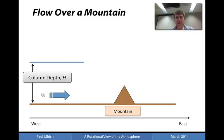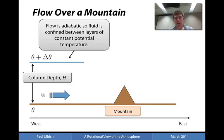We're going to assume that there is a particular column depth associated with the flow — so this might be the scale height of the atmosphere, or it might be the distance to the tropopause — and that the column depth is defined between adiabatic fluid layers. So we have a particular potential temperature theta located at the surface, and the column depth is located at some distance delta theta up in the atmosphere. Since flow is adiabatic, the fluid will be confined between layers of constant potential temperature, and consequently we can use the construction of potential vorticity in this scenario.